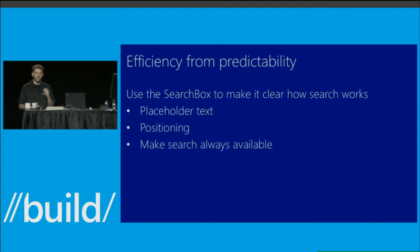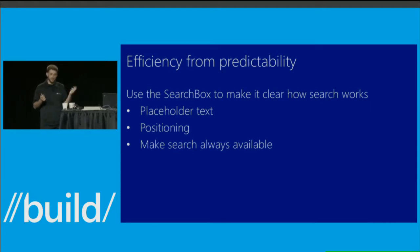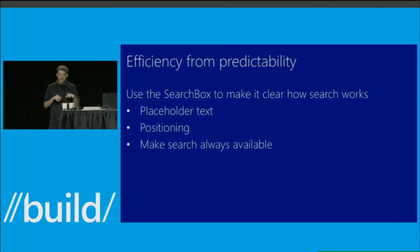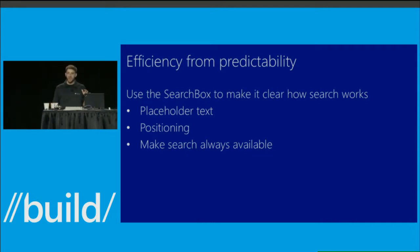Predictability is the most important efficiency feature — and this applies to power users just as much as new users. Think about touch typing versus hunt-and-peck: touch typing is fast because you don't have to think at all — you know where all the keys are and can predict what will happen on screen. The same is true for any UI feature. If a user knows exactly what to expect, they're going to be more efficient. The search box helps with this through placeholder text, positioning, and making search always available in the same way.